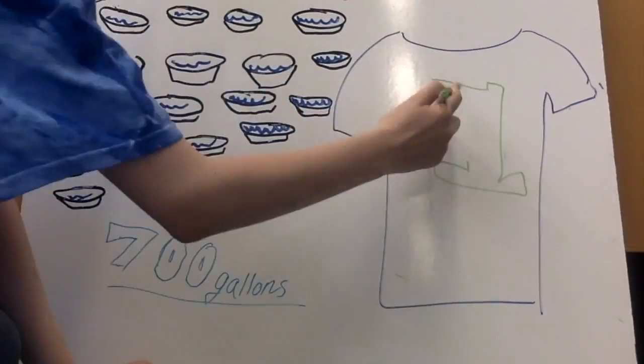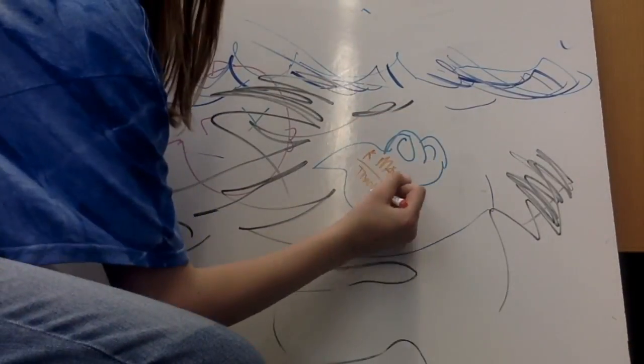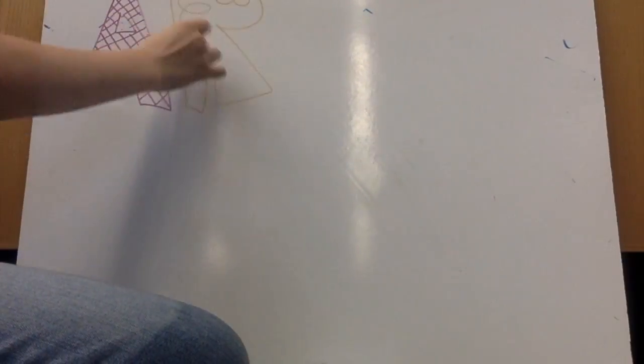22 bathtubs or 700 gallons is what it takes to make one cotton t-shirt. This affects us, the fish, and the ocean.